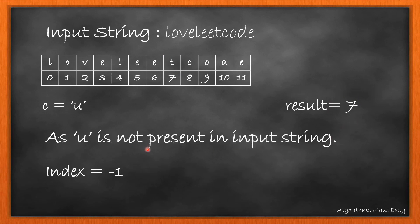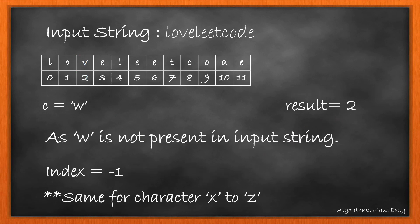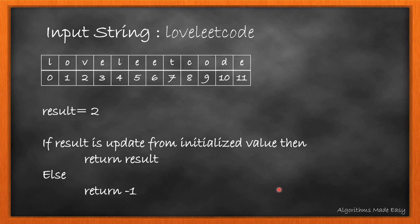Moving ahead, as character U is not present in the string. V appears only once at index 2, so we find the minimum of result and index. As 2 is less than 7, we update the result. As characters W to Z are not present in the string, we won't update the result for these. Now, as the value of result has been updated, we will return the result.